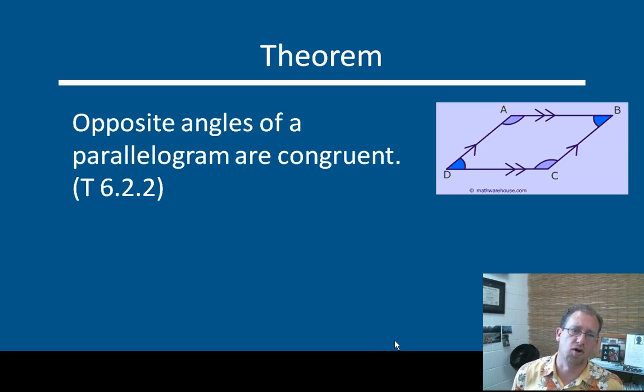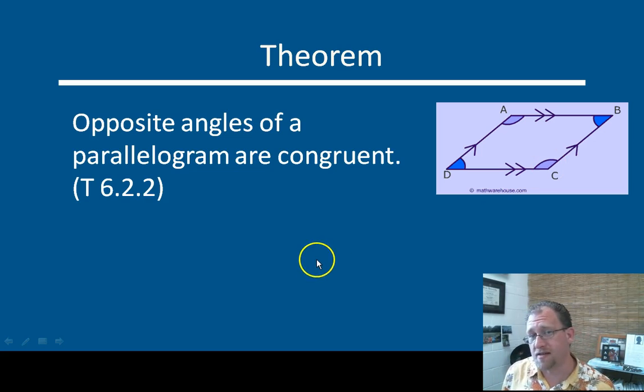The next theorem we're going to look at is that opposite angles of a parallelogram are congruent. And this figure helps you with this. So angle D and angle B, opposite angles, they are congruent. Angle A and angle C, opposite angles, they are congruent. That is always the case in a parallelogram.